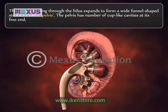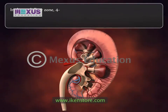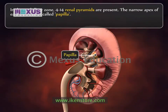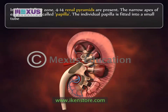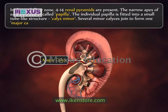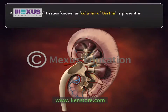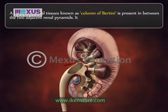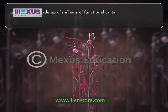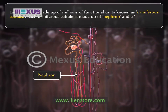The ureter entering through the hilus expands to form a wide funnel-shaped structure called the pelvis. The pelvis has a number of cup-like cavities at its free end known as calyces. In the medullary zone, 4 to 14 renal pyramids are present. The narrow apex of each pyramid is called the papilla. Each individual papilla is fitted into a small tube-like structure called the minor calyx. Several minor calyces join to form one major calyx. A mass of cortical tissue known as the column of Bertin is present between two adjacent renal pyramids. Each kidney is made up of millions of functional units known as uriniferous tubules.